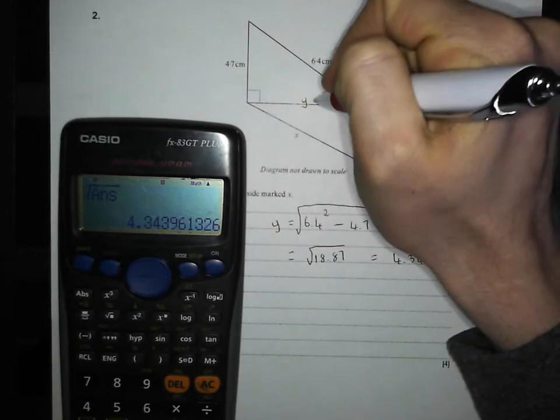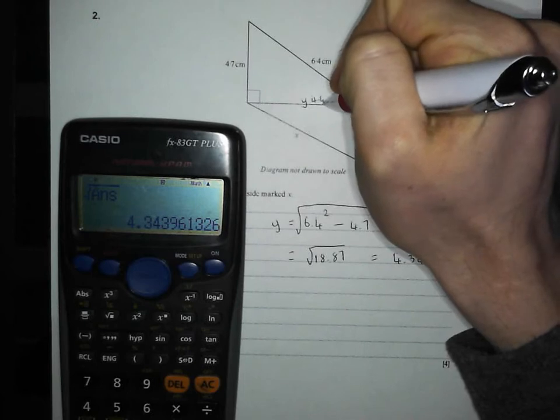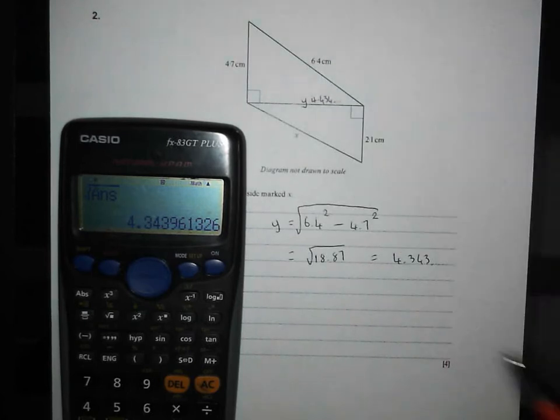I'm going to mark that on my diagram, just so I remember it, 4.343 and so on. Check, it's shorter than my hypotenuse. It is, so things are looking good.